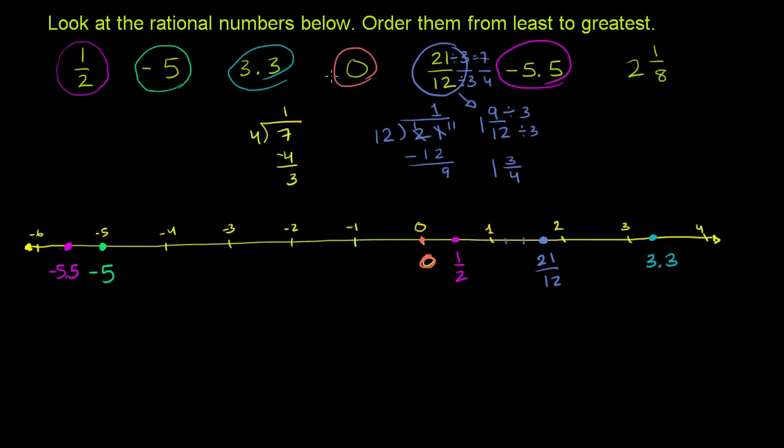And then finally, we have 2 and 1-eighths. I'll do that in orange again. Well, I'll do it in blue. 2 and 1-eighths. So it's 2 and then 1-eighth. And so if we want to find the exact place, we could divide this into eighths. This would be 4-eighths. This would be 2-eighths. And that would be 6-eighths. And then 1-eighth would sit right over here. So that right over there is 2 and 1-eighth.